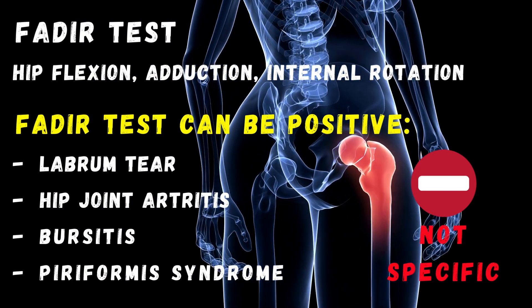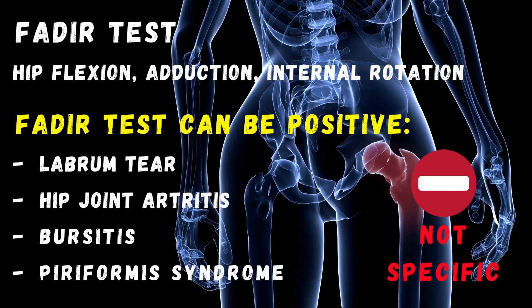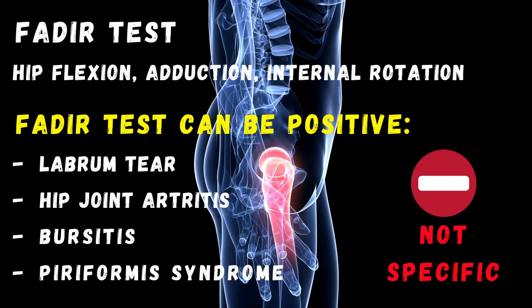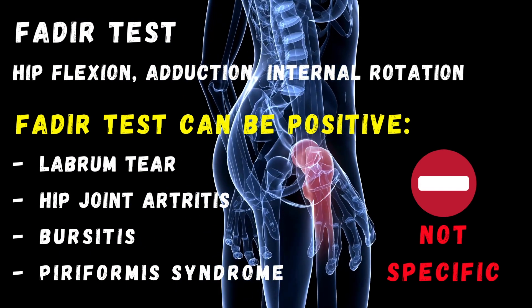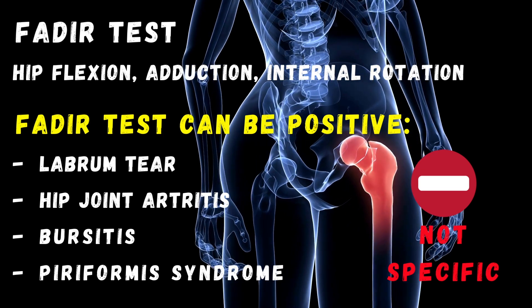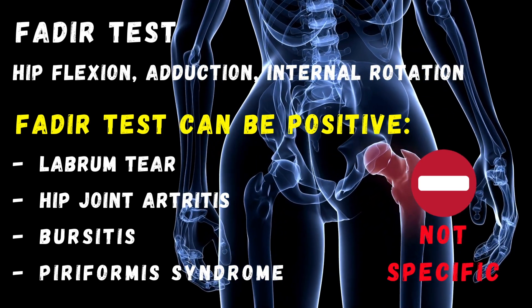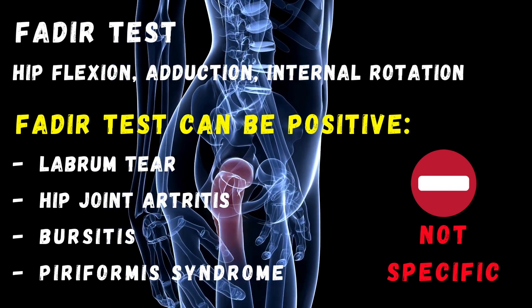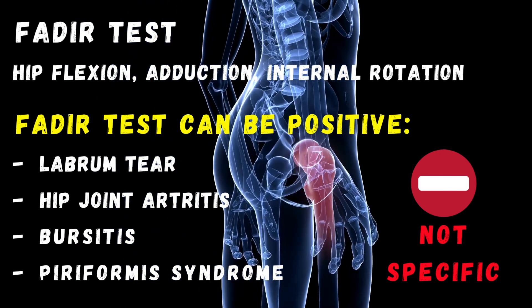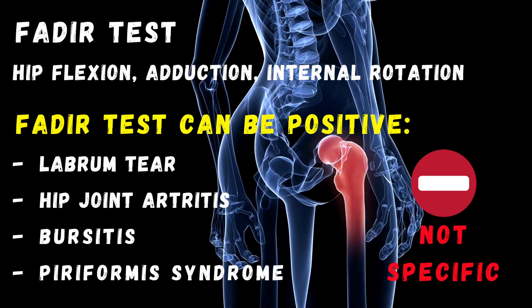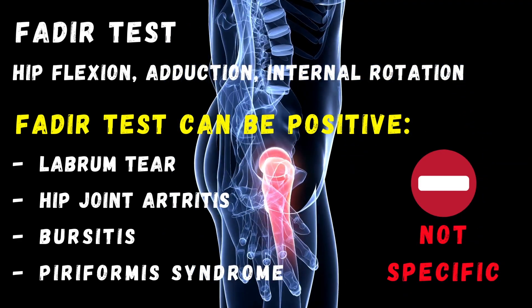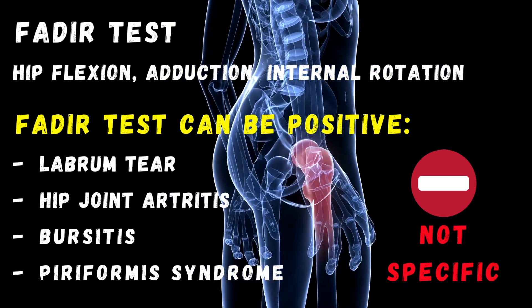The most commonly used test is called the FADER test, which stands for flexion, adduction, and internal rotation of the hip joint. The FADER position of provocation is associated with impingement at the anterior rim of the acetabulum. The FADER test is also positive in labral tear, hip joint arthritis, piriformis syndrome, and psoas bursitis, which makes this test not specific.